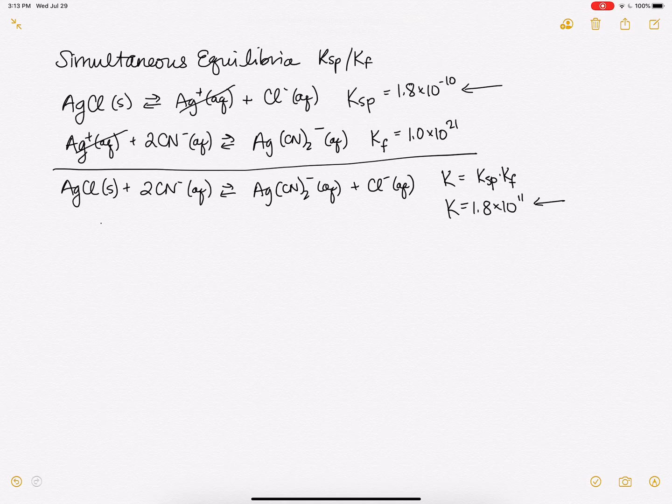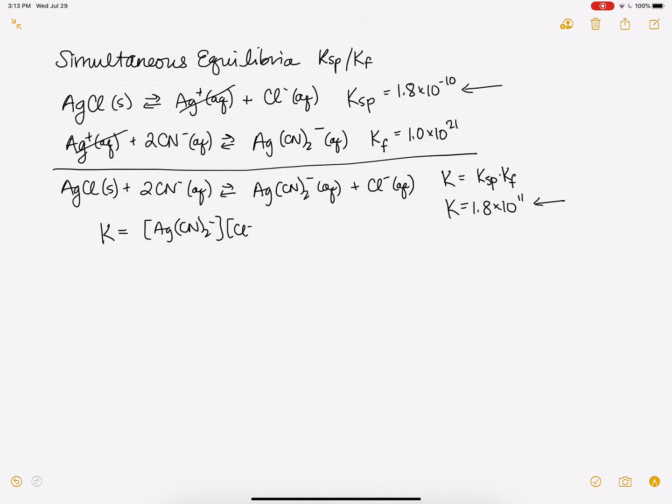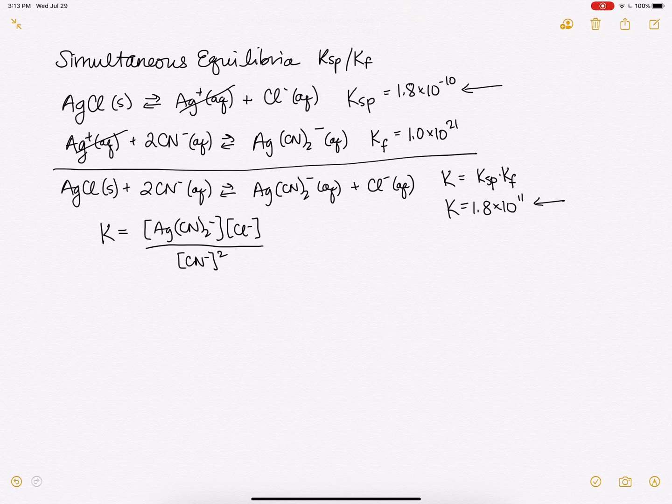And we can write our expression for this. We have our complex ion, the chloride ion, and then cyanide ion squared on the bottom. So now that we know this is our new K, we can see that it's dramatically more soluble in a solution of cyanide than it is in plain water.